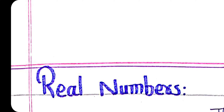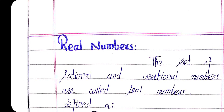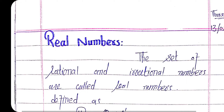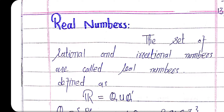Assalamu alaikum students, welcome back to the lecture. Today we are going to learn about real numbers, and we will also learn about intervals and how we can represent different types of intervals on the real line. First of all, the definition of the real number: the collection of rational and irrational numbers are called real numbers, represented by R. Q represents the set of rational numbers and Q-bar represents the set of irrational numbers.